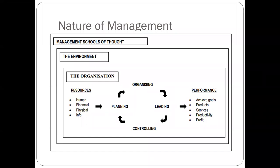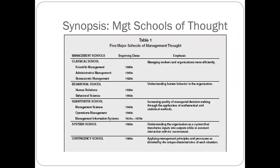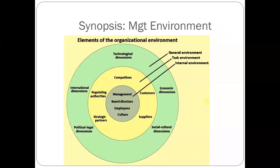So in the nature of management, you need to know the schools of thought. We'll spend about two weeks on that. The second aspect is the management environment — where does your company operate? There are forces or elements that affect its operations. The internal environment includes management, employees, directors, and the company's culture.